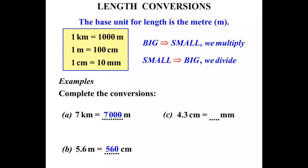The next one: four point three centimeters equals how many millimeters? Well we are changing centimeters to millimeters. The connection between the two is ten millimeters to make up a centimeter, so we are dealing with a factor of ten.